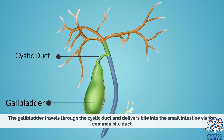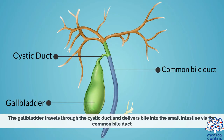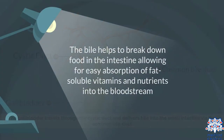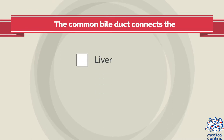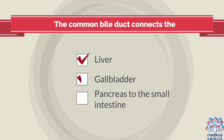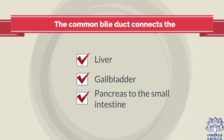The gallbladder travels through the cystic duct and delivers bile into the small intestine via the common bile duct. The bile helps to break down food in the intestine, allowing for easy absorption of fat-soluble vitamins and nutrients into the bloodstream. The common bile duct connects the liver, gallbladder, and the pancreas to the small intestine.